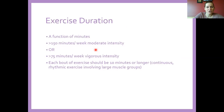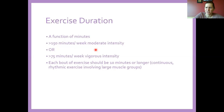We want to try to get 150 minutes of moderate or 75 minutes of vigorous intensity exercise per week. Each bout should be at least 10 minutes in duration, and it can be any type of continuous rhythmic exercise involving large muscle groups — swimming, biking, running, elliptical, rowing, walking, hiking, dancing, Zumba — any of those can get your heart rate up and improve cardiovascular fitness.